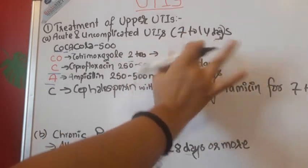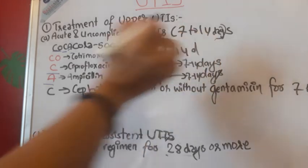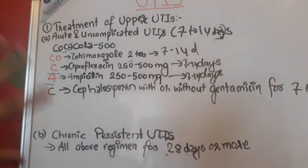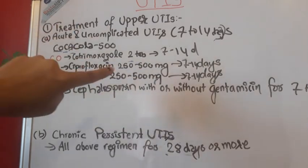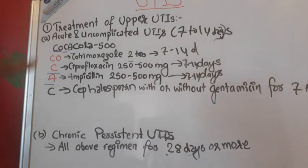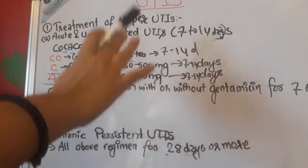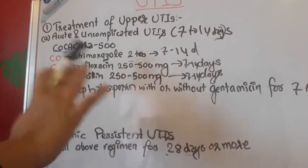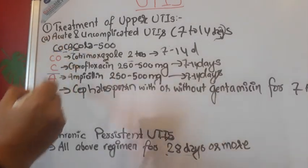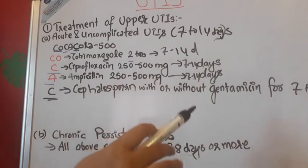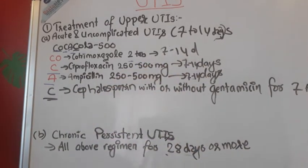The mnemonic for upper UTIs has been slightly altered to 'COCA-COLA 500.' Previously it was 'COCA 250–500 TON' for lower UTIs. Now it becomes 'COCA-COLA 500' — the COCA part is the same: cotrimoxazole two tablets, ciprofloxacin, ampicillin. The new addition is the extra 'LA' — which stands for cephalosporin, with or without gentamicin, for seven to fourteen days.